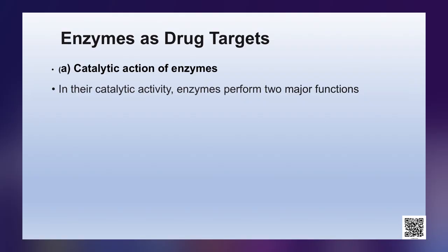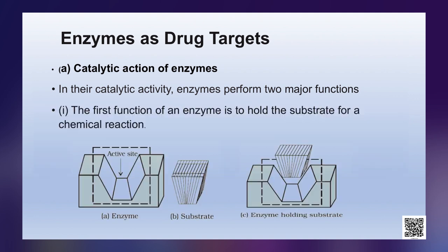We will study drug-target interaction with the examples of enzymes and receptors. First, we will discuss the catalytic action of enzymes. To understand the interaction between a drug and an enzyme, we should know how enzymes catalyze reactions. In their catalytic activity, enzymes perform two major functions. The first function is to hold the substrate for a chemical reaction — active sites of enzymes hold the substrate molecule in a suitable position so it can be attacked by the reagent effectively.